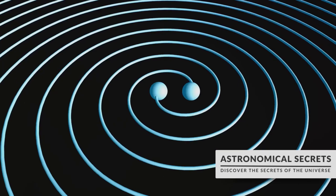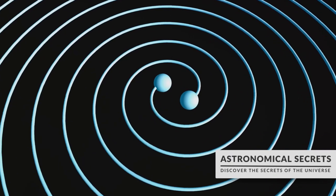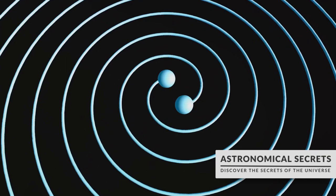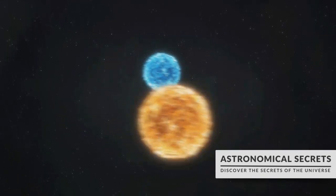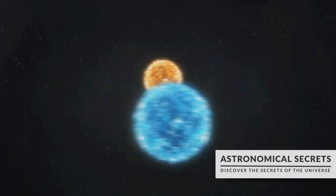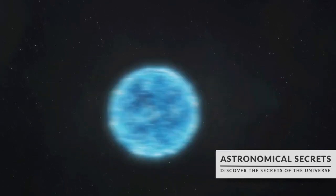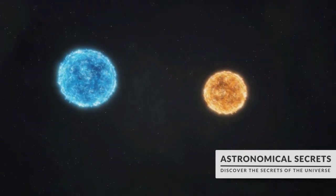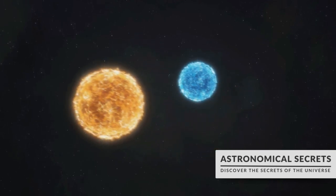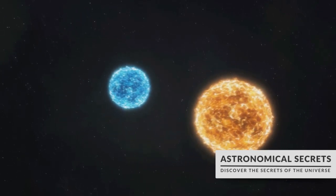Moving on, pulsars also serve as laboratories to study gravitational waves. These ripples in the fabric of space-time, first predicted by Albert Einstein, can be detected by observing pairs of pulsars. These pairs, known as binary pulsars, orbit each other, and as they do, they lose energy causing their orbits to shrink. This energy loss, detectable as changes in the pulsar's timing, aligns with predictions made by Einstein's theory of general relativity, providing indirect evidence of gravitational waves.